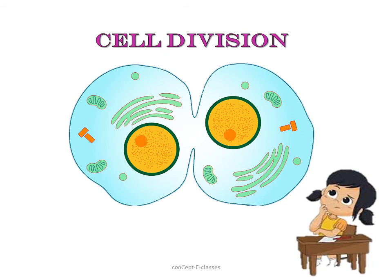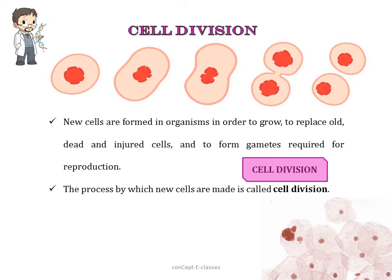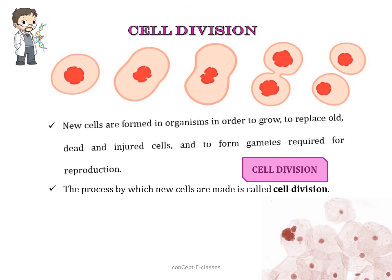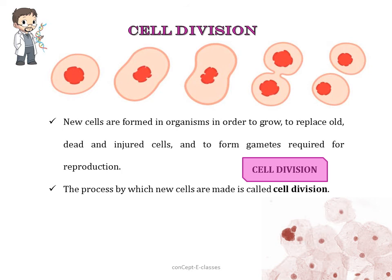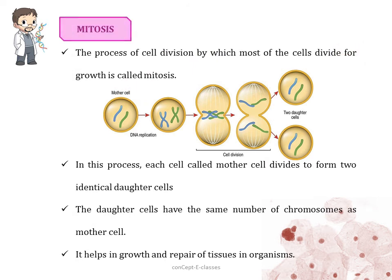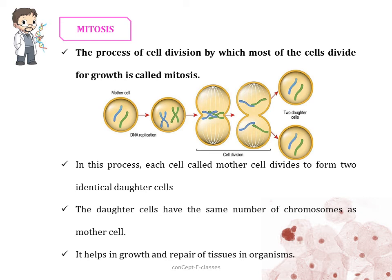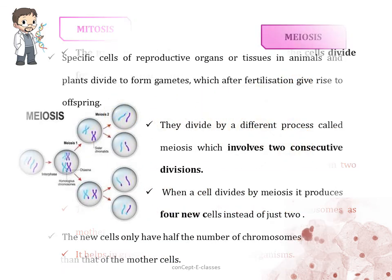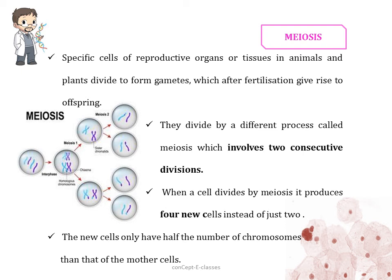Now let's briefly see about cell division. Cell division in organisms is not only meant to produce a whole new organism — it is also to grow and replace old, dead, or injured cells, and to form gametes required for reproduction. This process by which new cells are made is called cell division. There are two types: mitosis and meiosis. In mitosis, the process by which most cells divide for growth, each mother cell divides to form two identical daughter cells that have the same number of chromosomes and identical nuclei. This helps in the growth and repair of tissues.